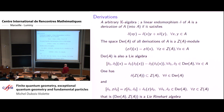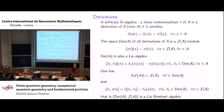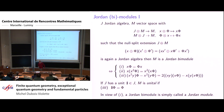The derivations form a module over the center — easy to see. They send the center into itself. The commutator of derivation operators is closed, forming a Lie algebra. Together it is an algebra and a module over the center with a standard compatibility, and this object is called a Lie-Rinehart algebra. This is quite standard.